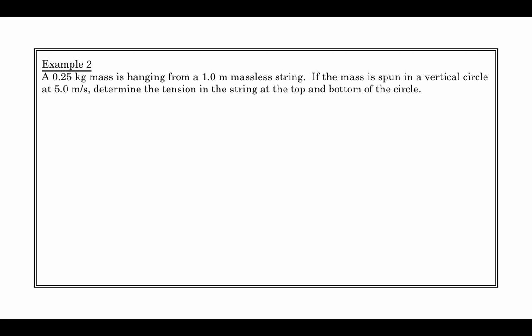Example number 2: A 0.25 kilogram mass hanging from a 1 meter long string. The mass is spun in a vertical circle at 5 meters per second, so we found a constant velocity and we're going to swing it in a circle at this constant velocity. Determine the tension in the string at the top of the circle and at the bottom of the circle. As you know, if you do this right now, if you take some string, put a mass on the end of it, the tension actually changes as you go around the circle. You'll notice that the tension at the bottom and the tension at the top are different.